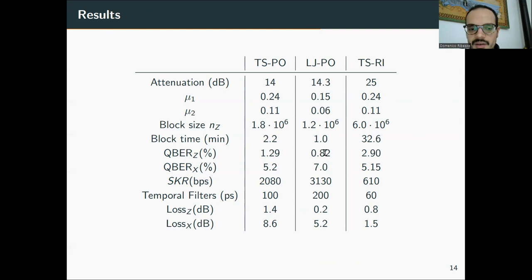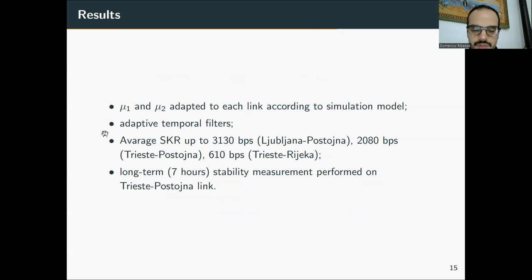Finally, I just want to show you that the QBER is pretty low for both of them in Z, also for Trieste-Rijeka. The interesting thing is that the QBER in X for the Trieste-Rijeka is the smaller one, even if it's the worst link, and this is because we put a very low loss free-space interferometer in that link that shows just 1.5 dB of attenuation, so this made the thing possible. Finally, we used also adaptive temporal filters. We used filters in order to maximize the key rate, so for the link where the dark counts had more weight, we used smaller filters.